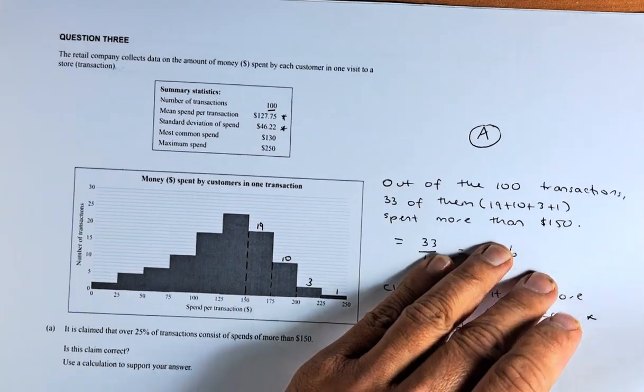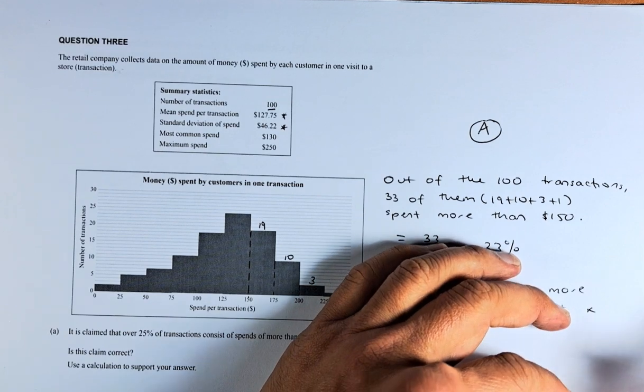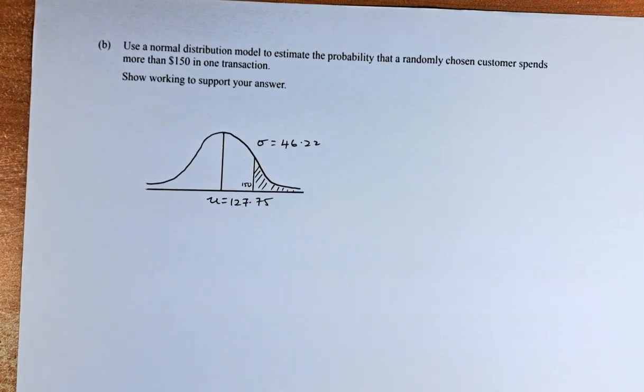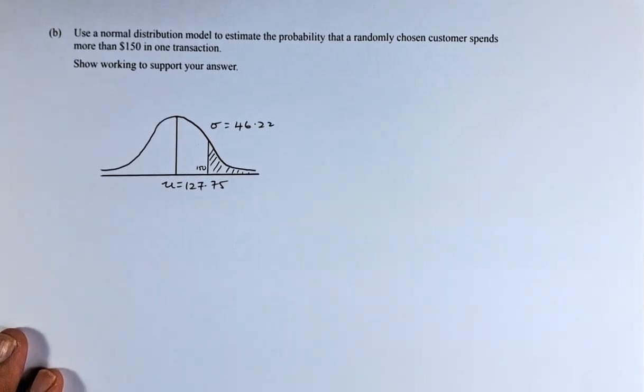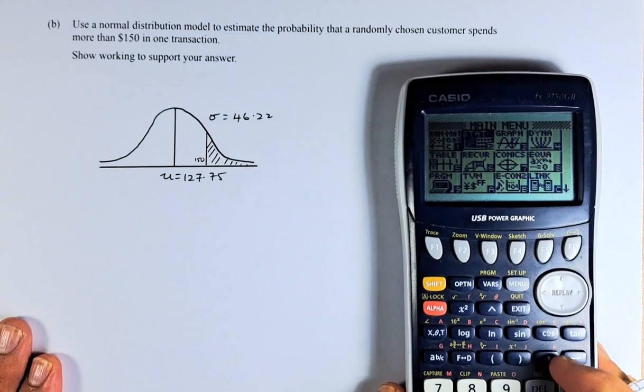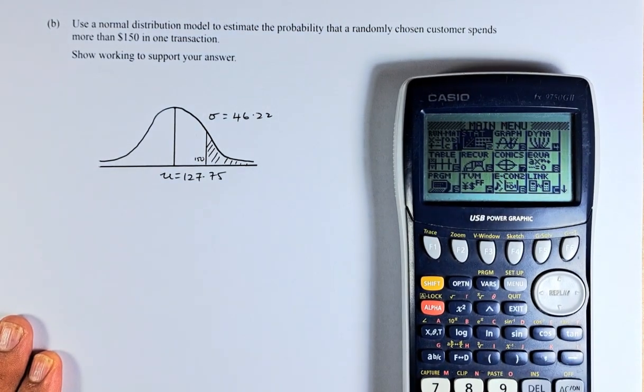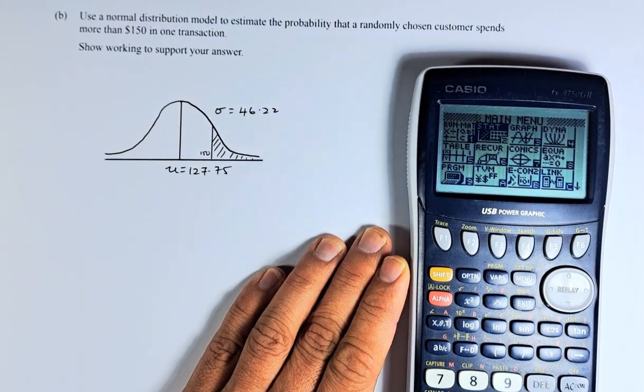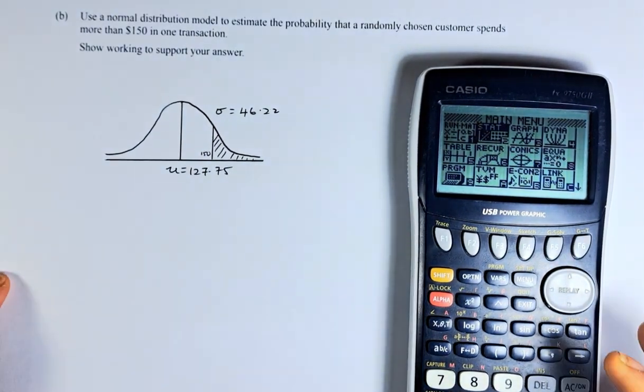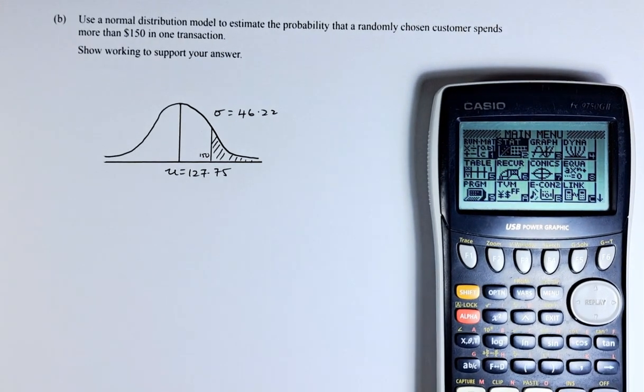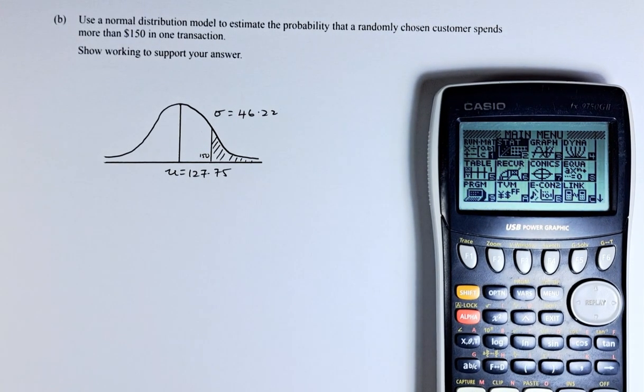Now we shall look at the second part, or in fact, it is question 3B. This is another achieved question. And this requires a bit of normal distribution. And that's why I'm going to bring my calculator into play. And we shall use the calculator to solve this. Hopefully you can find, I'll make the light brighter, so you are able to find the calculation online.